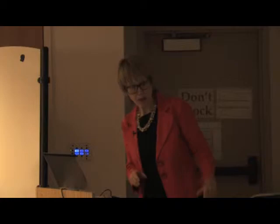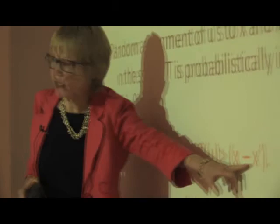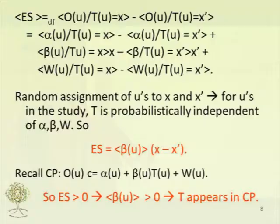Random assignment will ensure that the treatment is probabilistically independent of the background level alpha for the unit, as well as beta and the other causal factors W. That's the point of random assignment. And if you assume that, it's trivially clear that the effect size really depends on the average of beta — that is, whether treatment and control have different values.